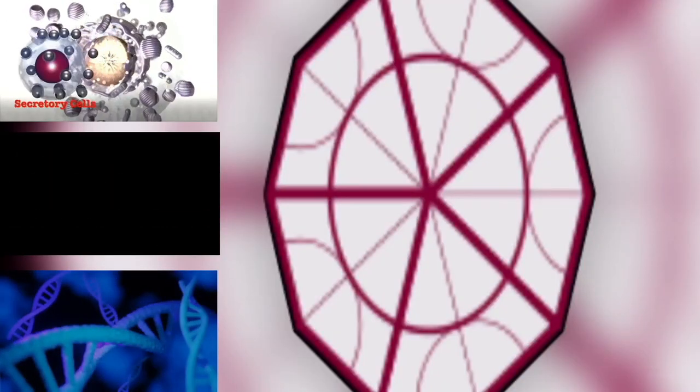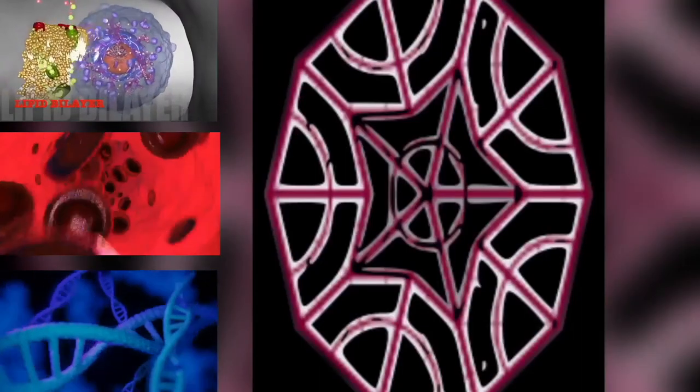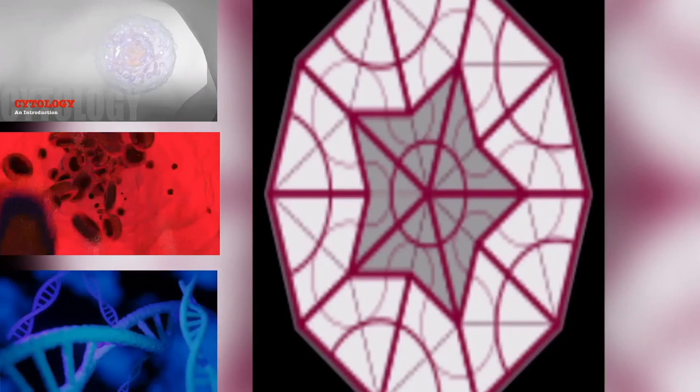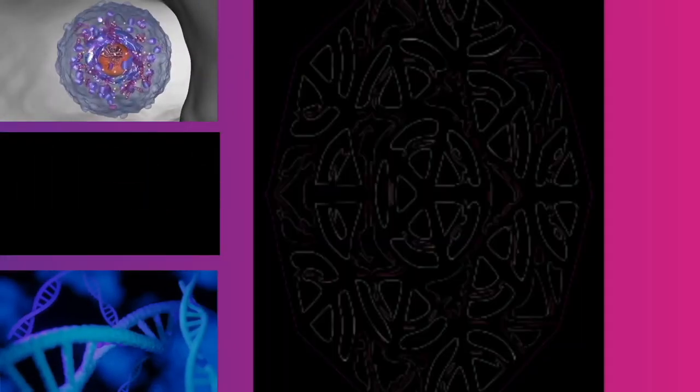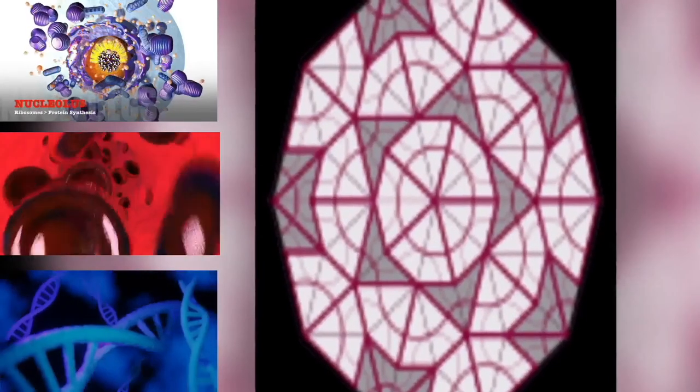Anaphase: kinetochore microtubules pull the two sets of chromosomes apart, and lengthening polar microtubules push the halves of the dividing cell further apart, while chromosomes are condensed maximally. Telophase: reversal of prophase and prometaphase events, and thus completing the cell cycle.